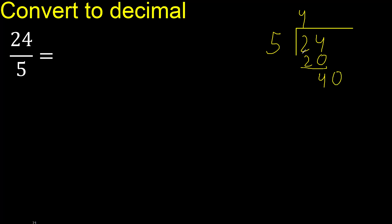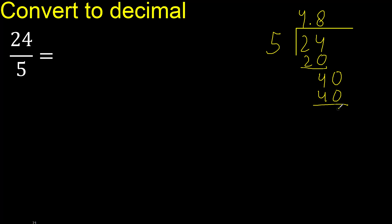4 is not a complete number, therefore complete with 0 — making 40. 5 multiplied by 8 is 40. 40 is not greater. 40 minus 40 is 0. Therefore finish.